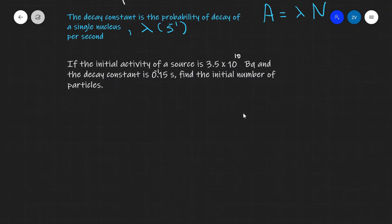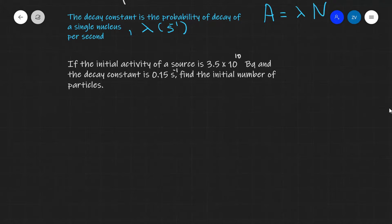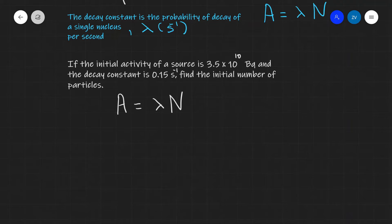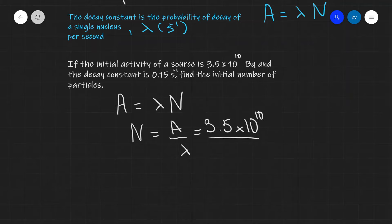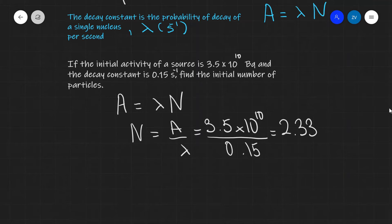Let's apply what we've learned to a problem. If the initial activity of a source is 3.5 × 10¹⁰ Becquerel and the decay constant is 0.15 seconds to the power of minus one, find the initial number of particles. Using A = λN, we rearrange to get N = A / λ. So N = 3.5 × 10¹⁰ divided by 0.15, which gives approximately 2.3 × 10¹¹ particles.